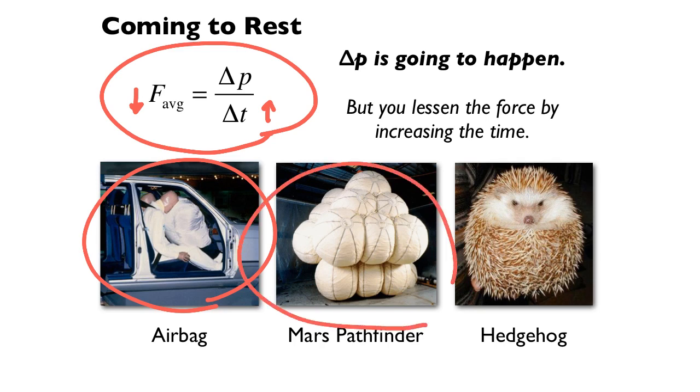There's other places where you see this. The Mars Pathfinder, one of the probes we sent to Mars, actually had giant airbags on it. That's how it landed because it turns out parachutes don't work well in the thin Martian atmosphere. Another thing that uses it is hedgehogs. Hedgehogs, when they're going to fall, roll up into a ball. Basically, they're surrounded by a crash cushion. This is something we will talk about in our in-person session.